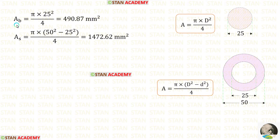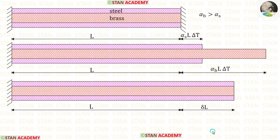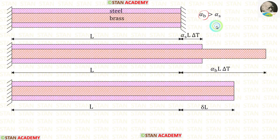First let us find the area of brass and steel using standard formulas. After calculation we get the areas. We know that the temperature is increased. If the bar is restrained there will be no expansion. If the bar is free to move, brass will expand more than steel because the alpha value for brass is higher than that of steel.